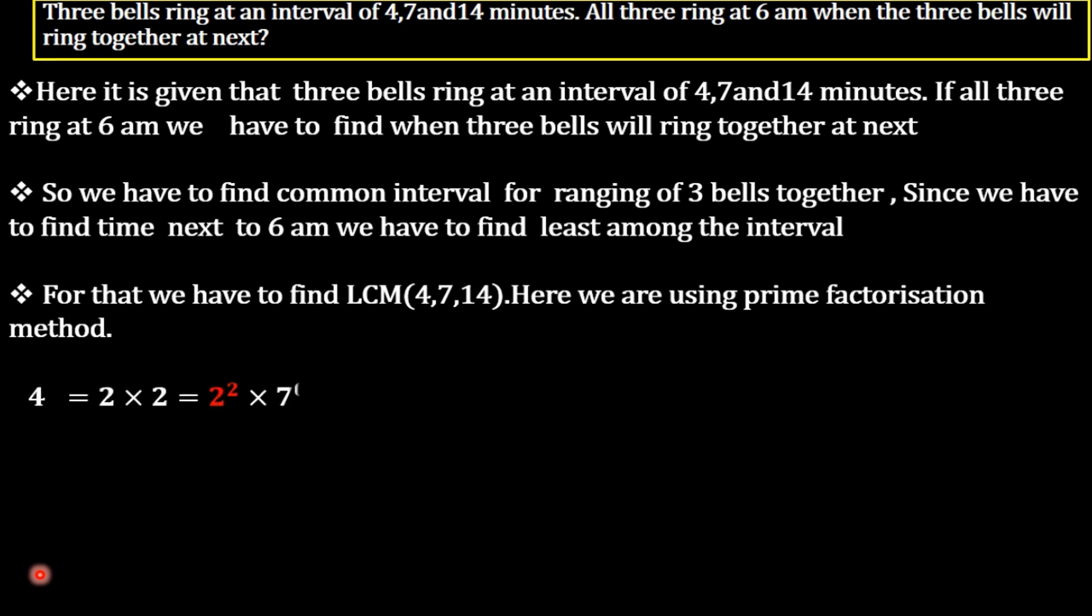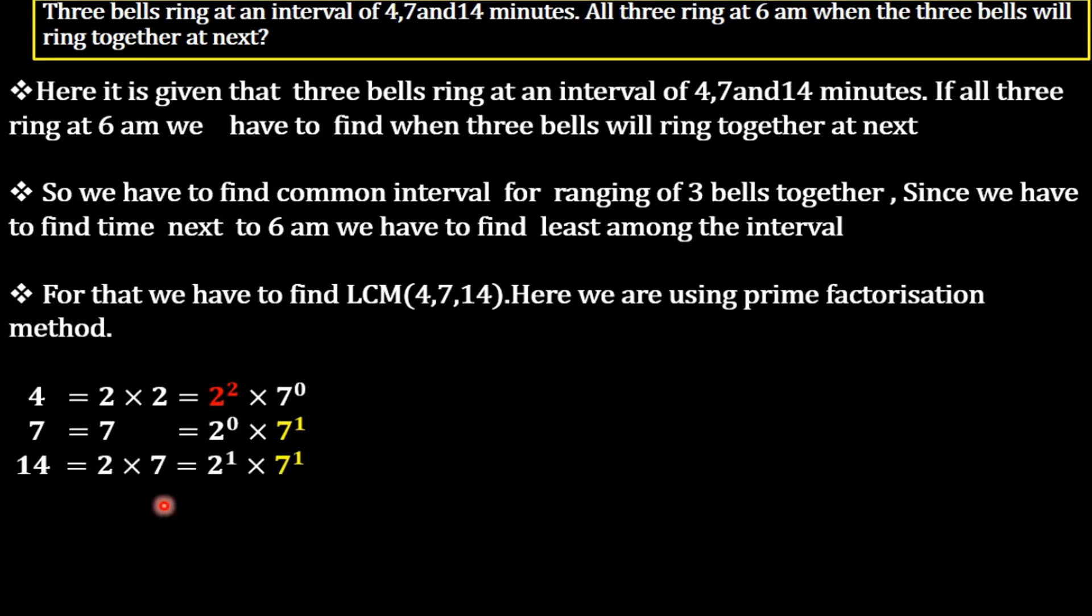We are using here the prime factorization method. 4 equals 2 times 2, that is 2 squared times 7 raised to 0. 7 equals 7. 14 equals 2 times 7.